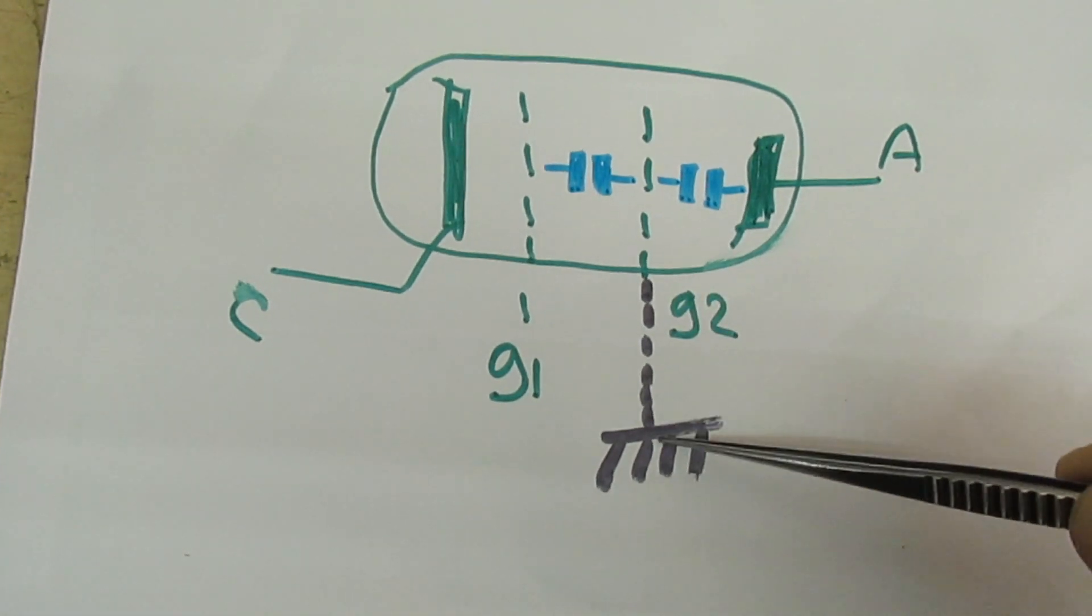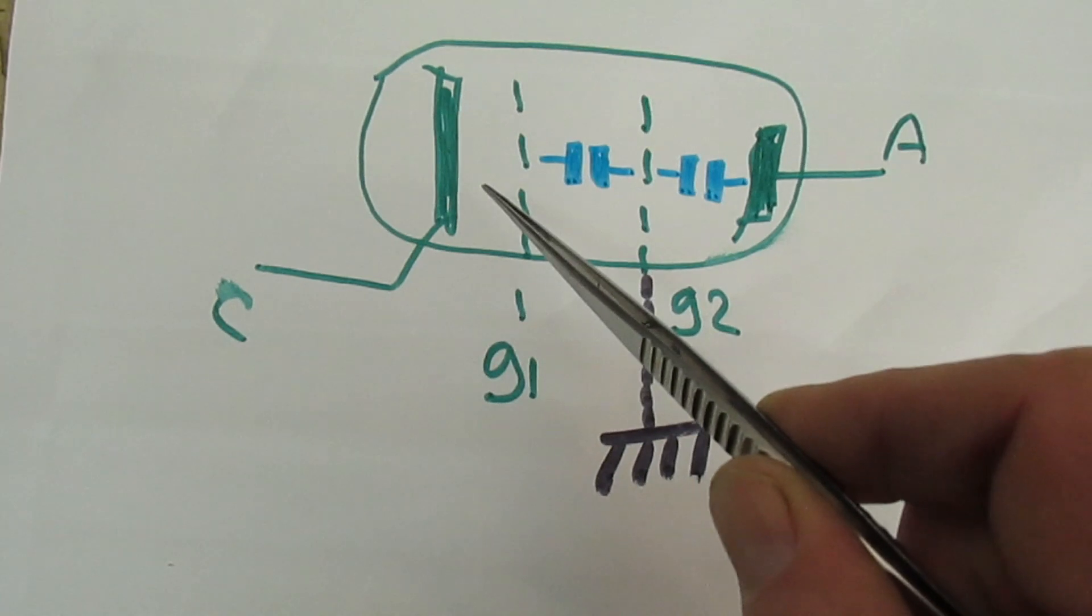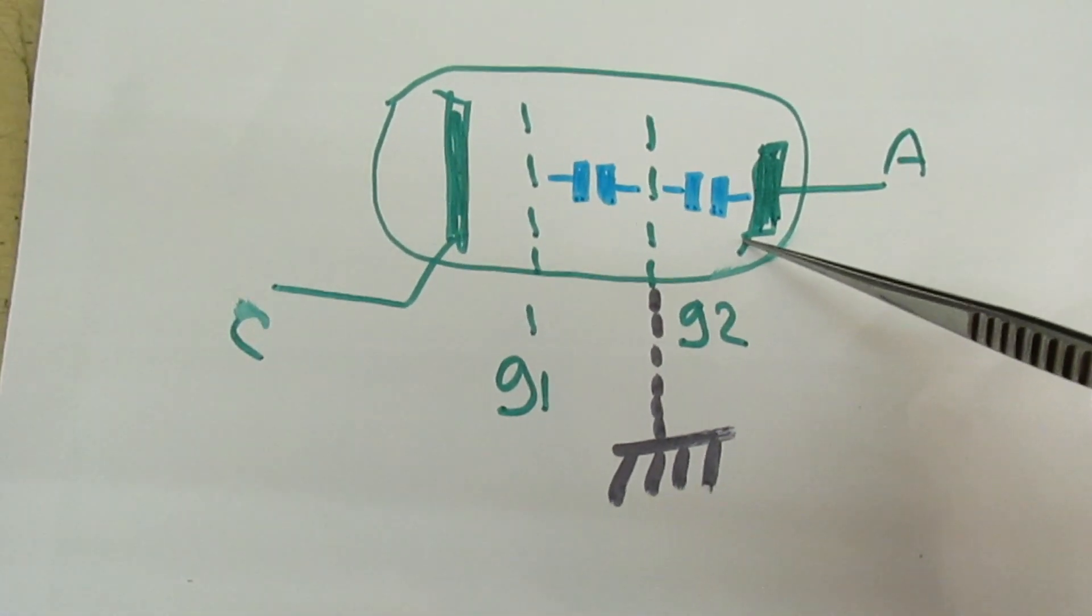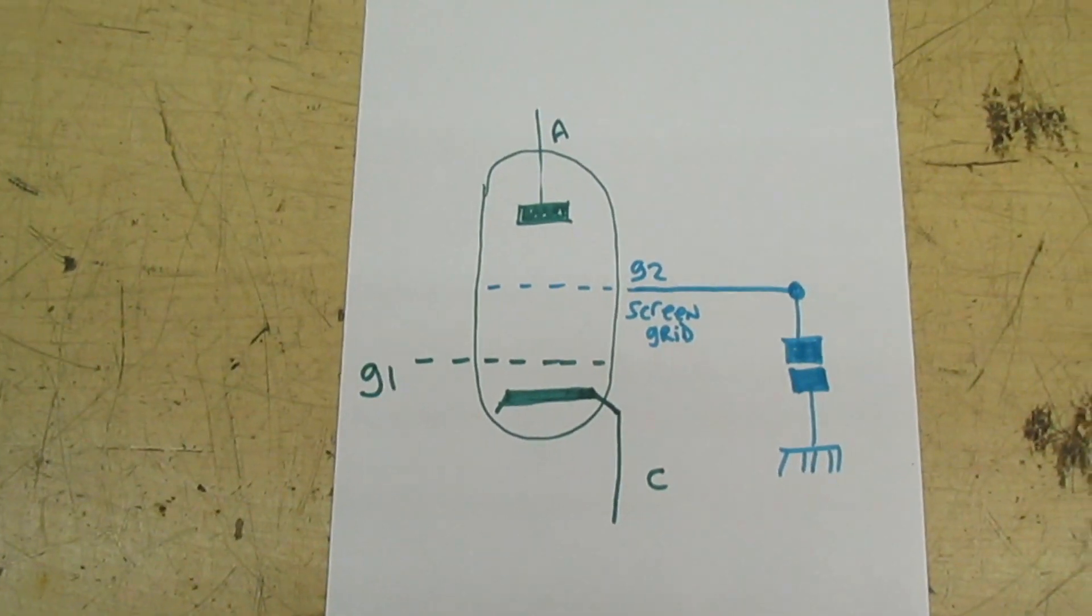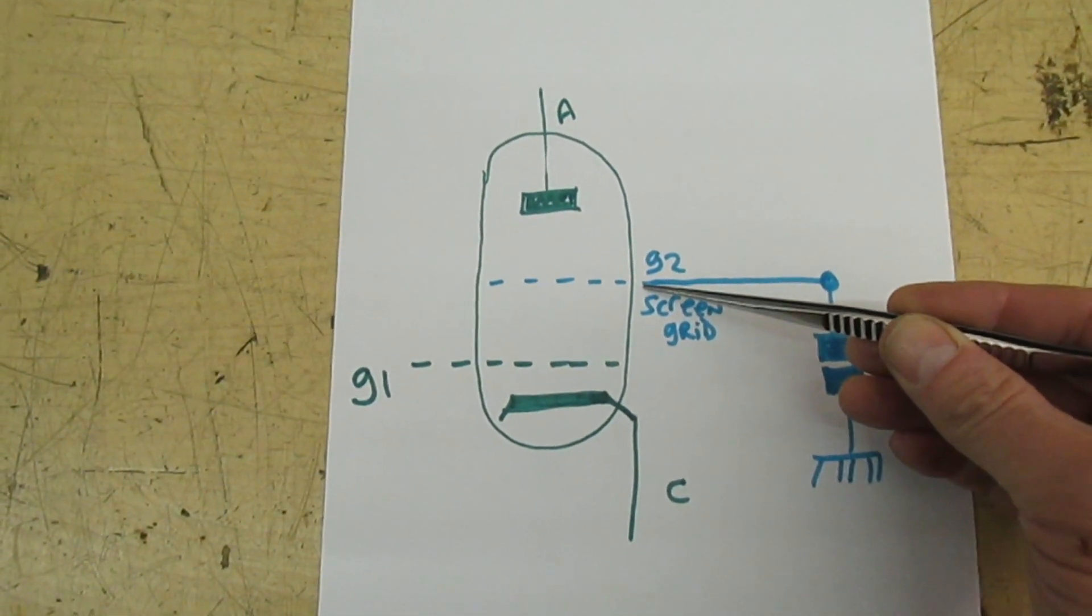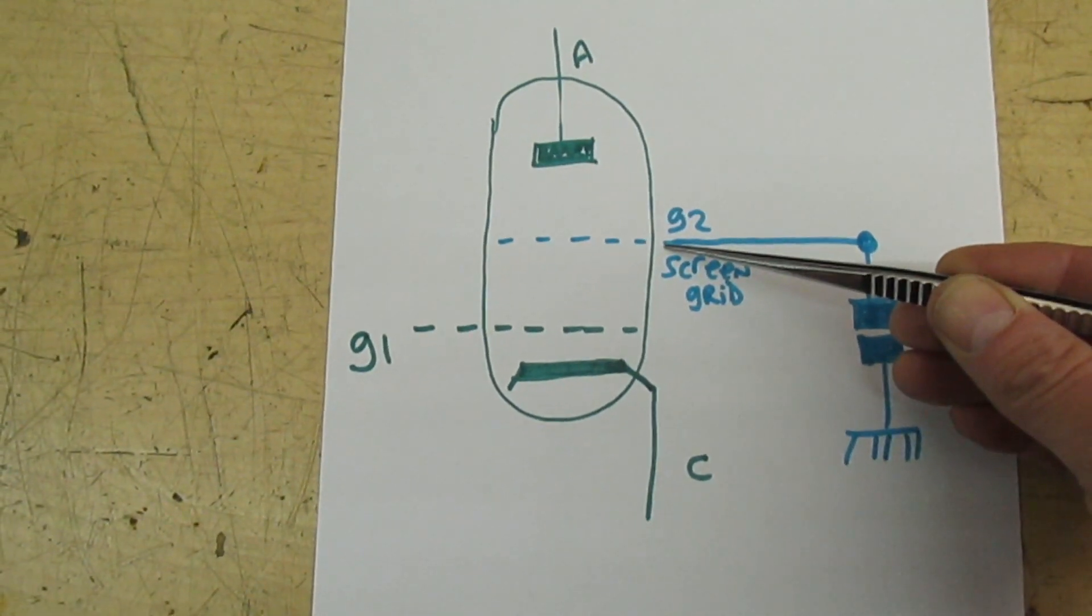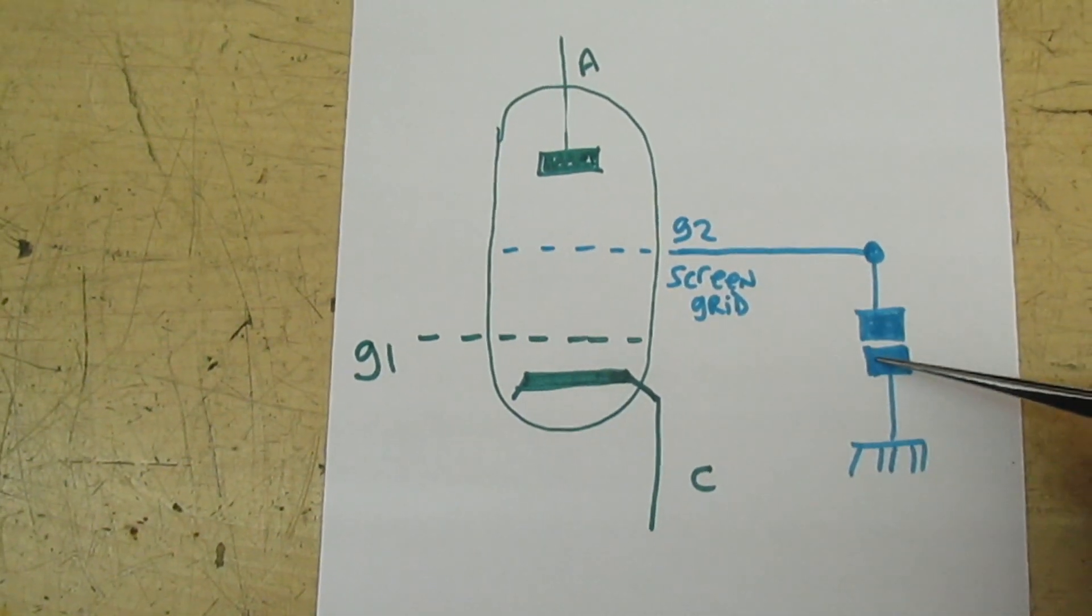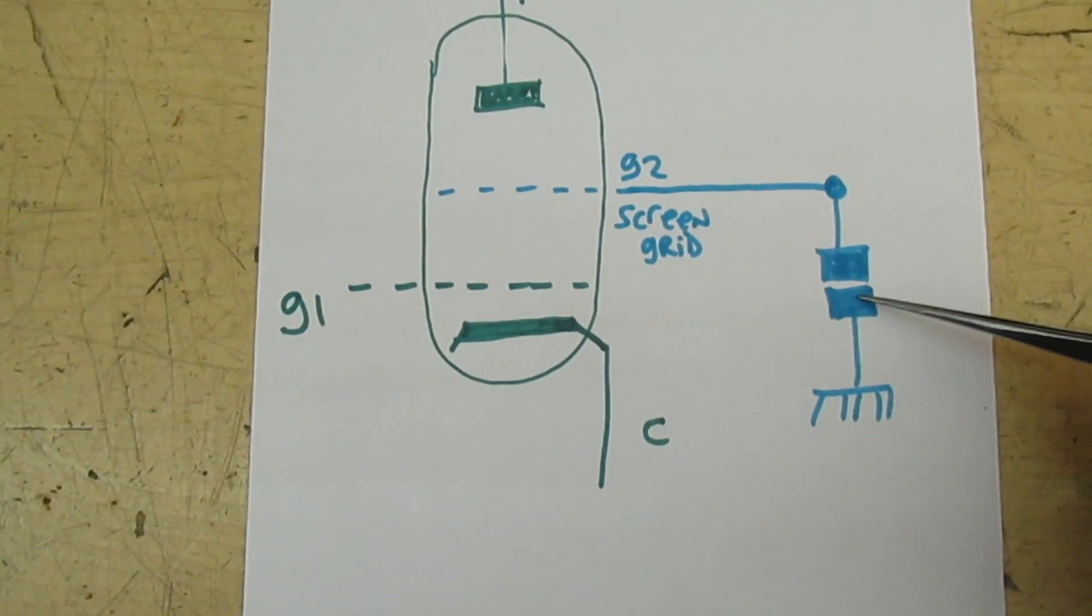In reality we can't just connect grid 2 to ground because what that will do is cut off the electron flow between the cathode and the anode, and the valve will be biased off. We connect it to ground through a capacitor. This capacitor forms a very low impedance path to ground at radio frequencies.